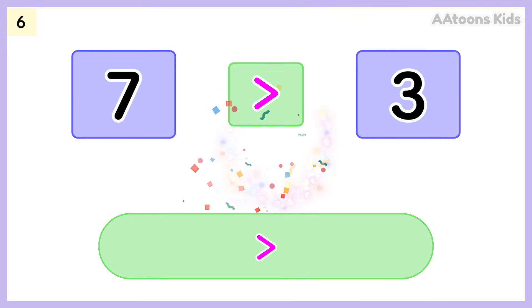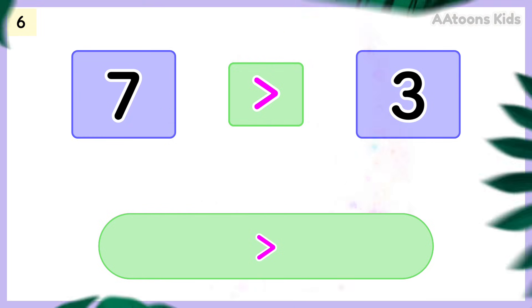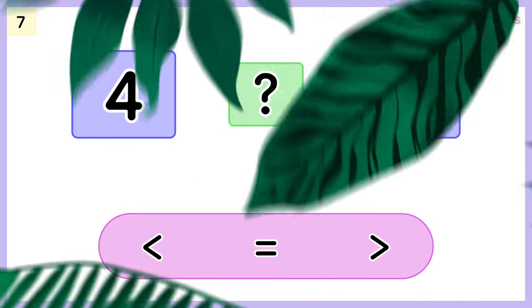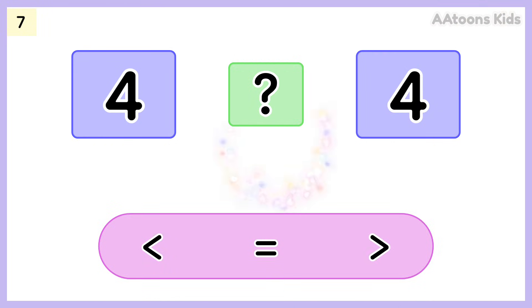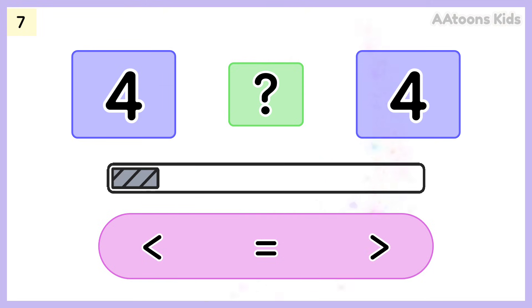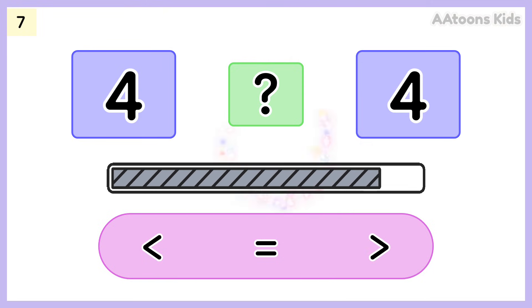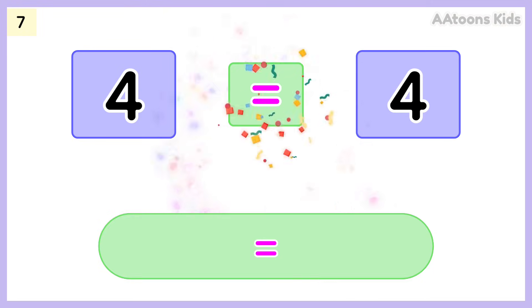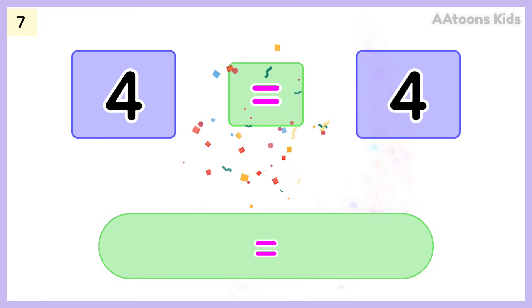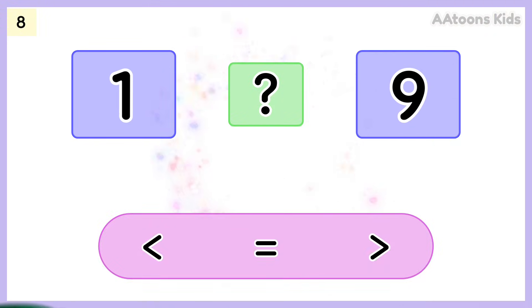Seven is greater than three. Choose the correct symbol. Four is equal to four. Pick the correct symbol.